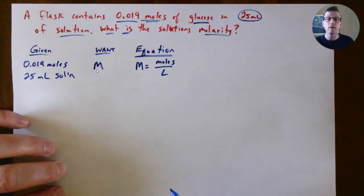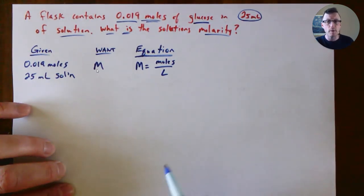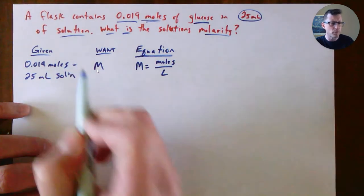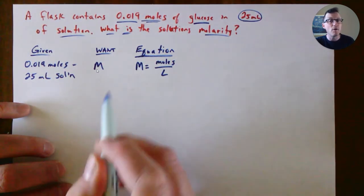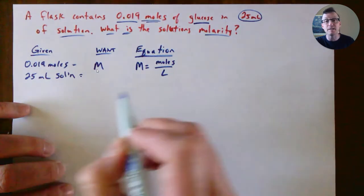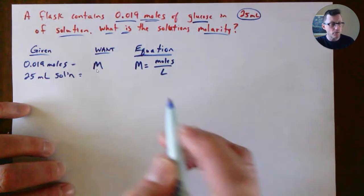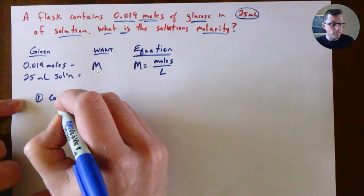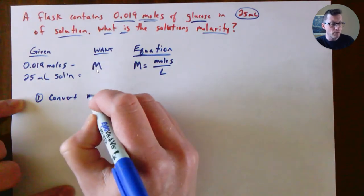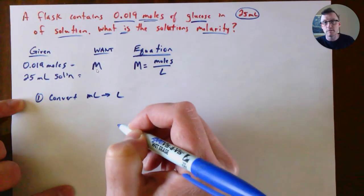Look at what we have. We already have the moles, and we do have a volume, but it's not in liters. So the first step is going to be to convert our milliliters into liters.